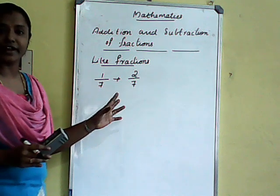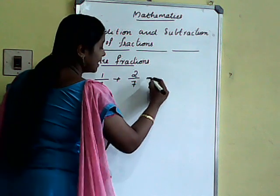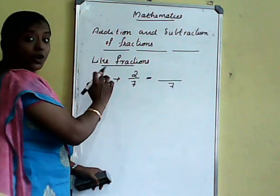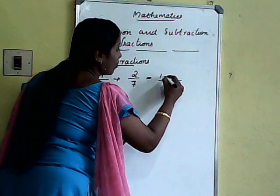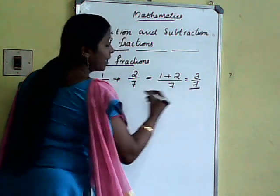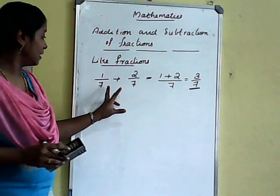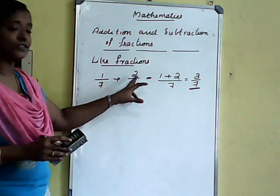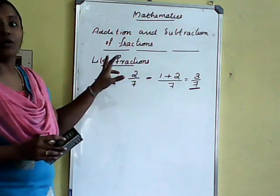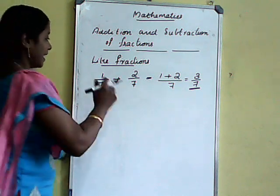How to add these type of fractions? If the denominators are same, the answer has the same denominator. We add only the numerators. That is 1 plus 2 — what will we get? 3 by 7. If the denominators are same, after adding, we put the same denominator. The operations are done on numerators only.